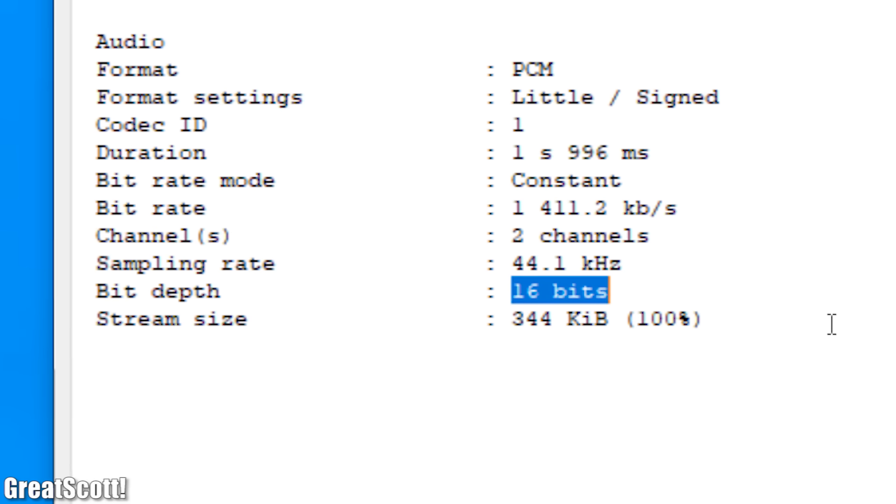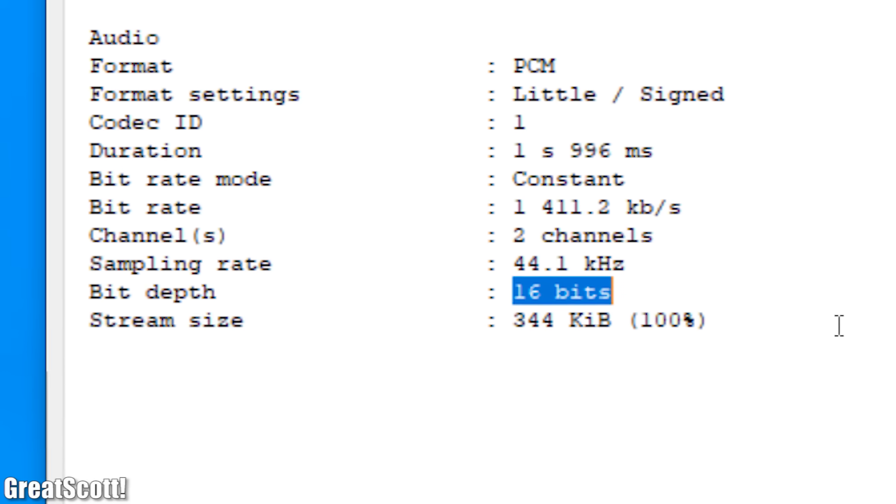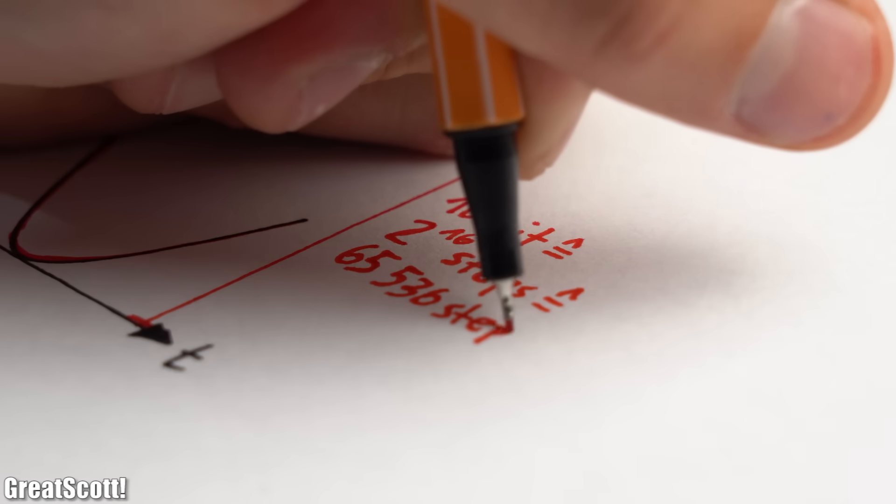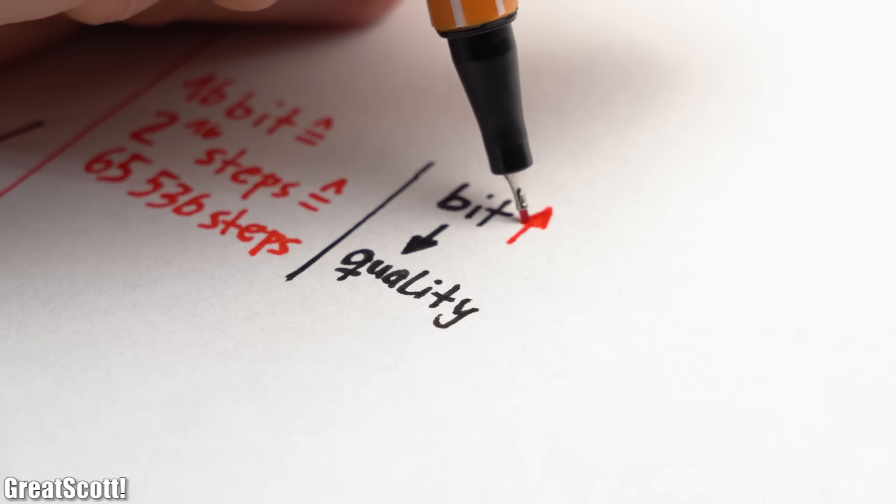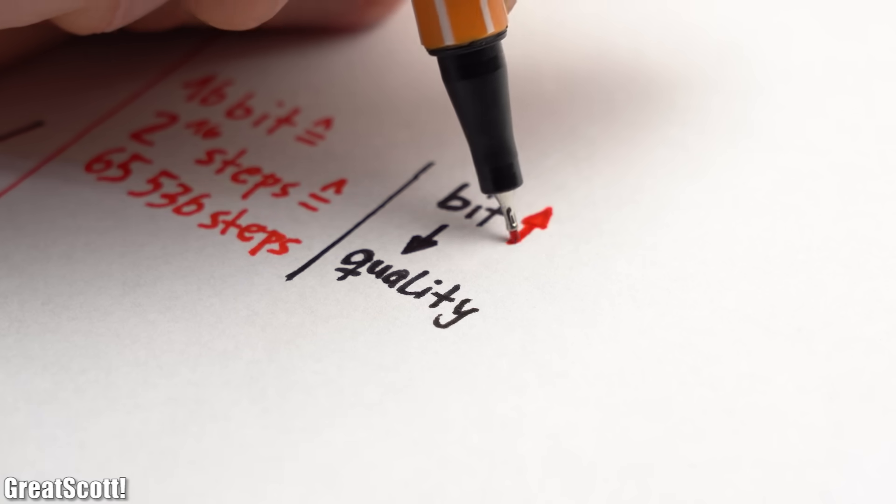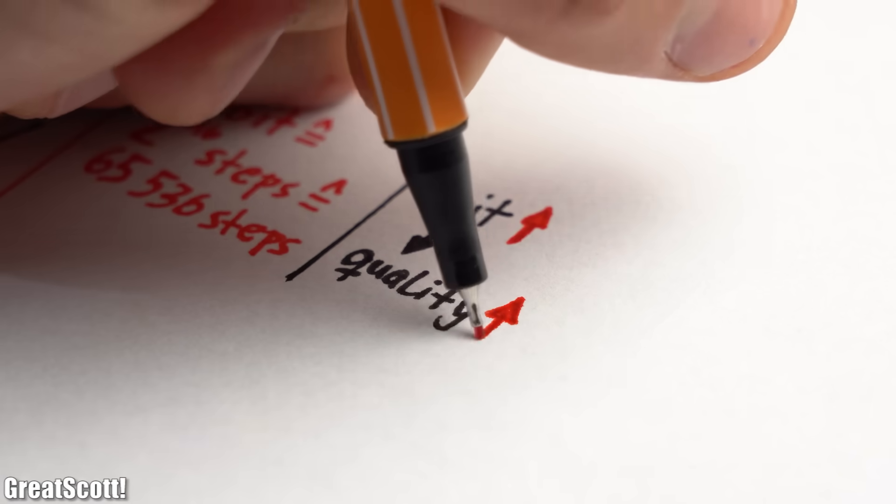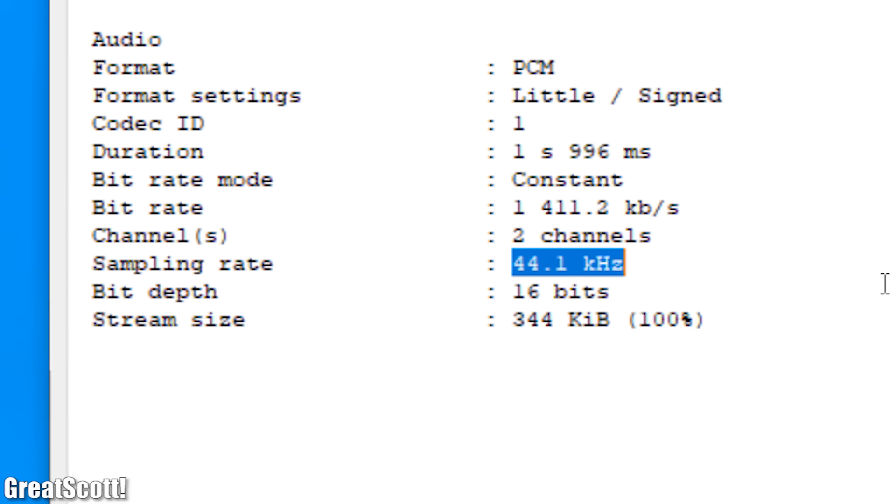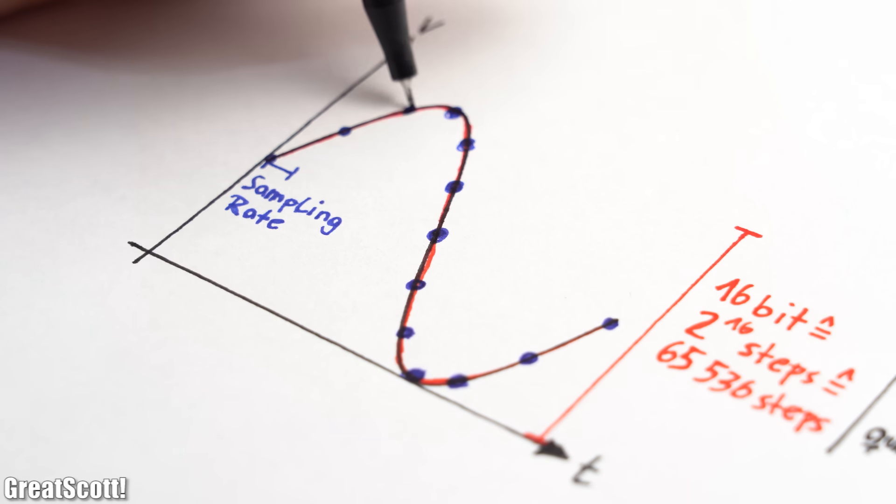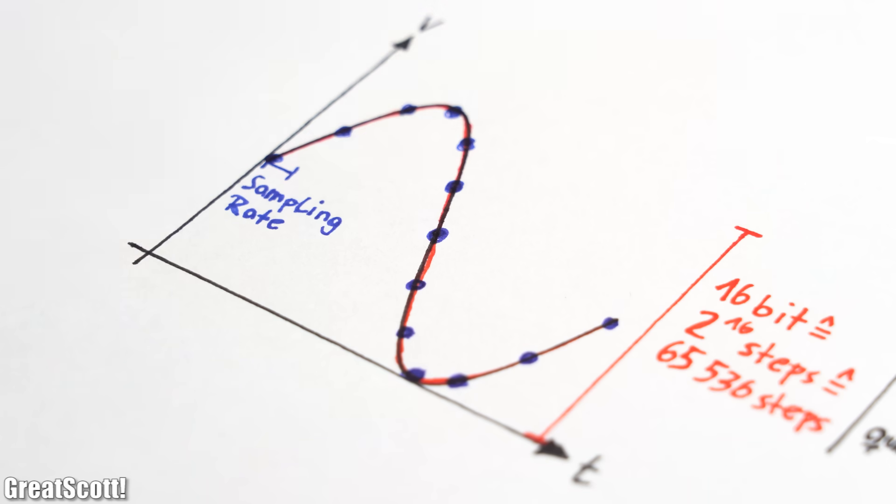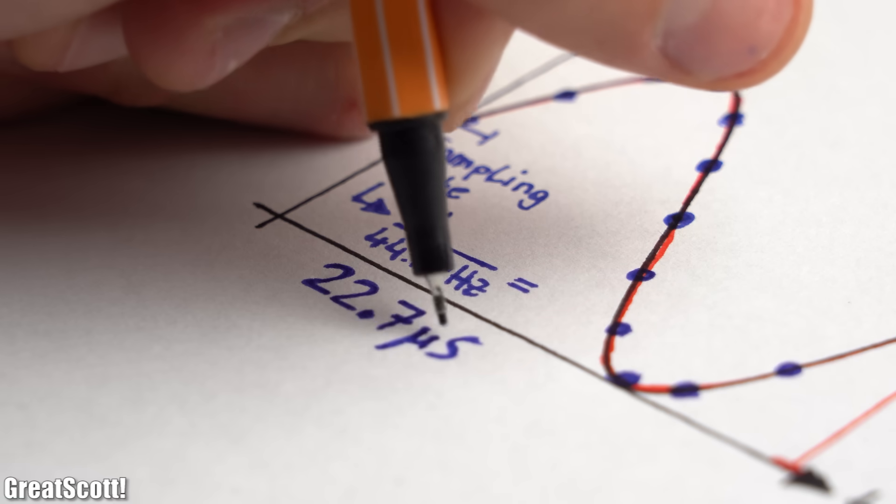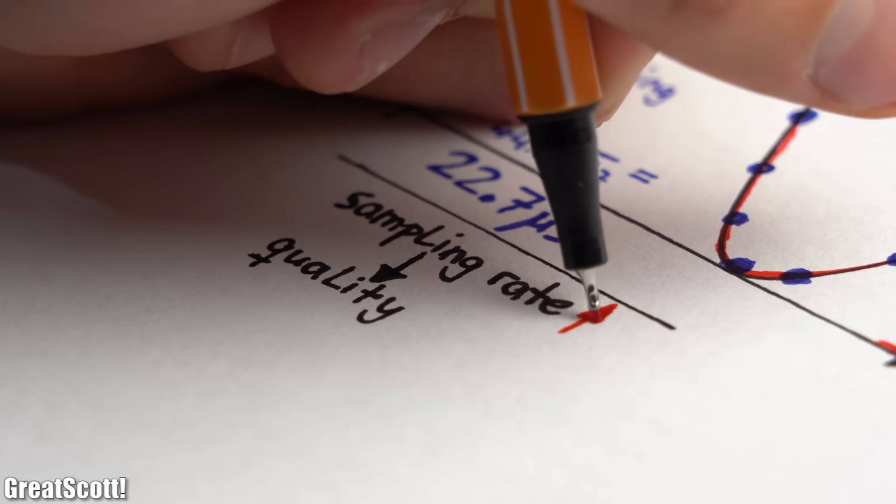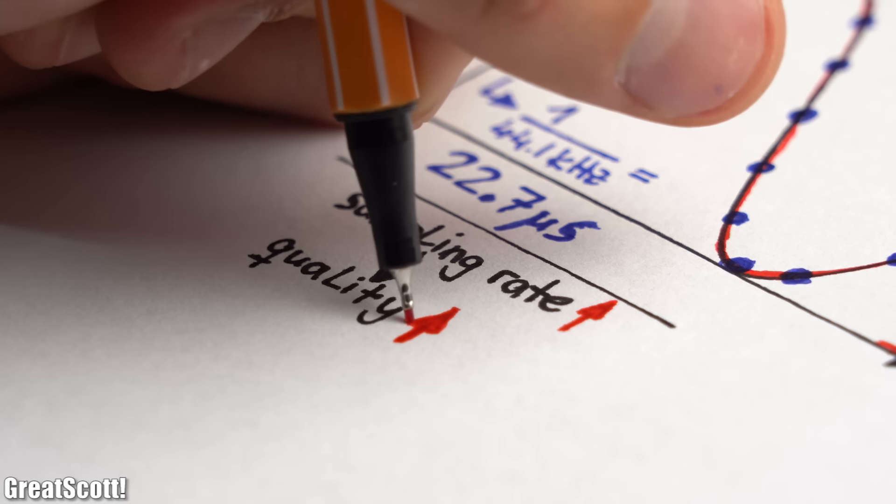That means we still got the original resolution of 16 bits, which describes in how many steps our original analog audio signal was digitally converted. As a rule of thumb, the more bits we got the closer we are to the original analog signal. Also, the sampling rate of 44.1kHz is kept intact, which describes how often the voltage of the analog signal got sampled. In this case around every 22.7 microseconds. And once again, the higher the sampling rate the closer we get to the real analog signal.